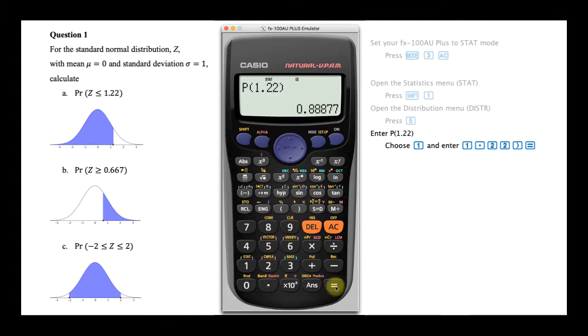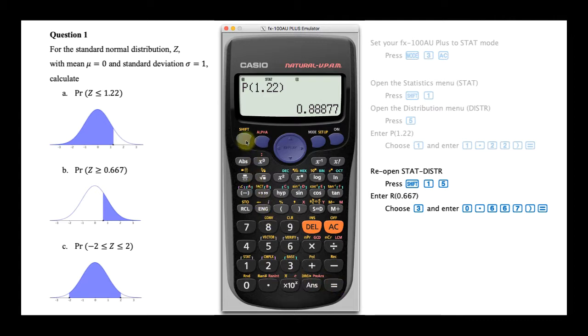Our answer is 0.88877. To perform our second calculation, reopen the statistics distribution menu by pressing Shift and then 1 and then 5. Choose an R calculation by pressing 3, enter the z value 0.667.